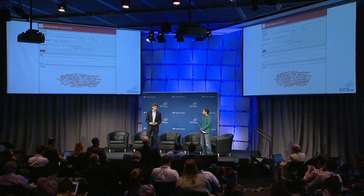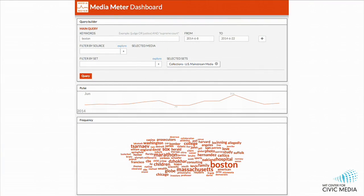Media Meter is a suite of tools and a framework. The jumping-off point is something we've designed called Media Meter Dashboard. It allows you to construct queries — say what keywords you're interested in, what date range, which media sources — and it lets you see results from widgets representing all of the Media Meter tools, all on the same screen at the same time. You can query a single topic or query two topics to compare.